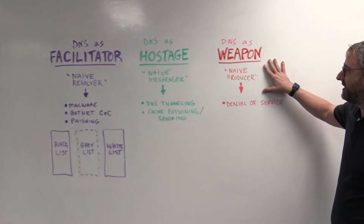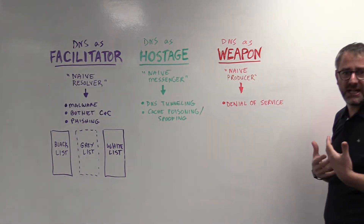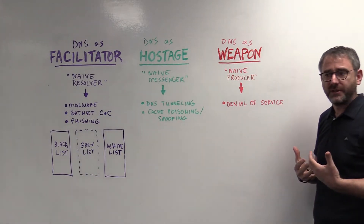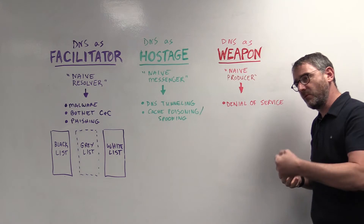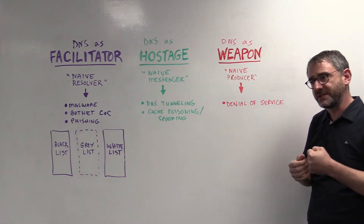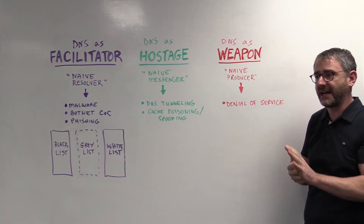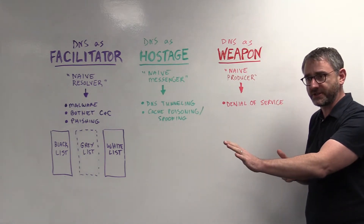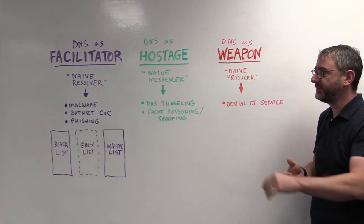In this case, we think of DNS as a naive producer. It is being used as a weapon, and it's being used to attack a third party by taking down their services and causing harm to them.